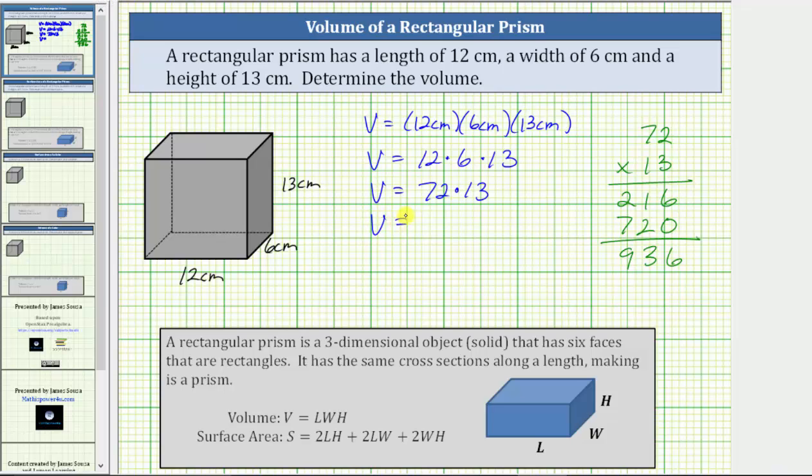The volume of the rectangular prism equals 936 cubic centimeters. Let's also write this as a complete sentence. The rectangular prism has a volume of 936 cubic centimeters.